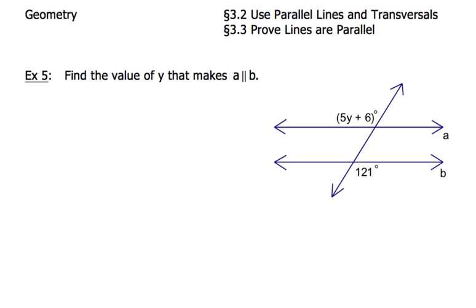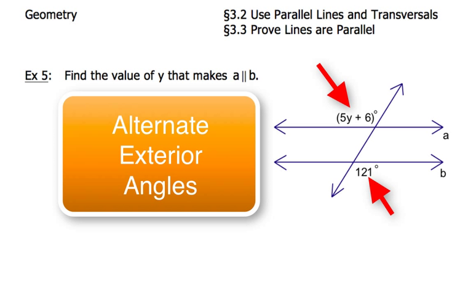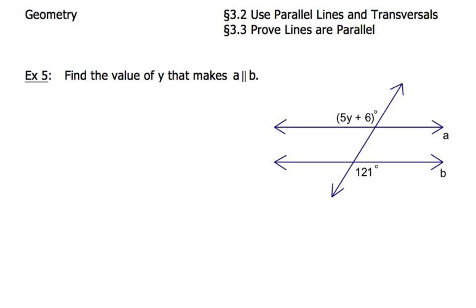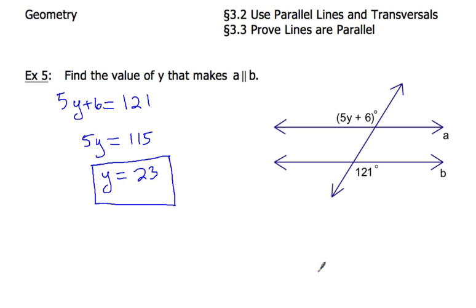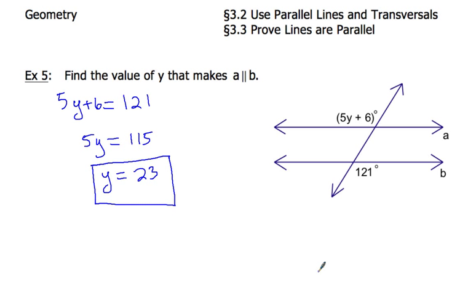In example 5, we've got to find a value of y that makes a parallel to b. Go ahead and hit pause and try to find the value of y on your own. You have to recognize what type of angles 5y + 6 and 121 are — they're alternate exterior angles. Did you set up the equation correctly and come up with y = 23? If you didn't, go back and make sure each step is shown, because you want to correctly write the equation and show your work.